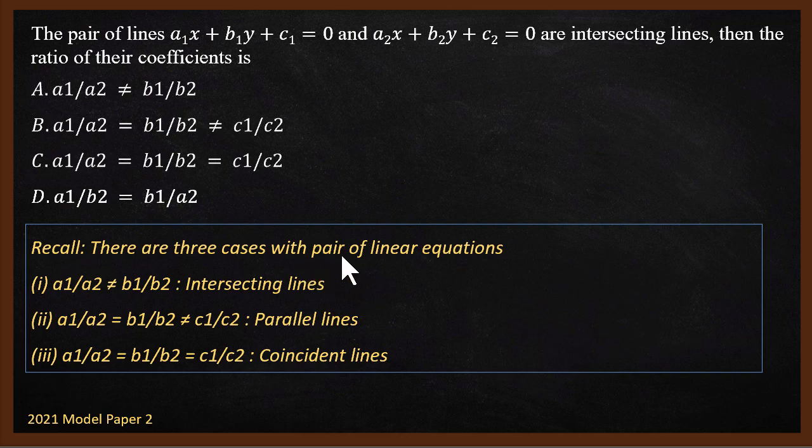There are three cases with pair of linear equations. First case, intersecting line. Intersecting line means they meet at one point, one solution, unique solution. So for intersecting lines, a₁/a₂ is not equal to b₁/b₂. In this case it will be intersecting.